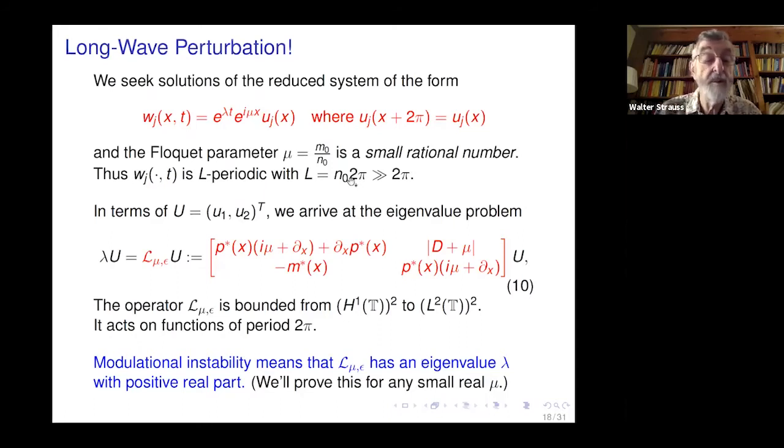When we make this change of variables, we get a set of equations for u1 and u2. Capital U is the pair u1, u2. Here's the equation. I've emphasized in red the linearized operator. The time behavior, d by dt becomes lambda times u. So this becomes an eigenvalue problem. We're looking for lambda with a real part which is positive. This acts on functions of period 2π of pairs. This is what we're going to be working with. Let's look at this operator L mu epsilon.